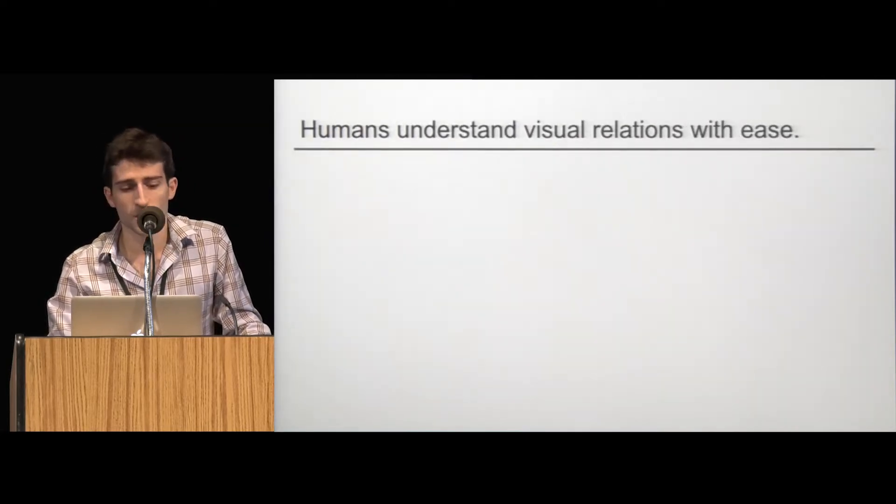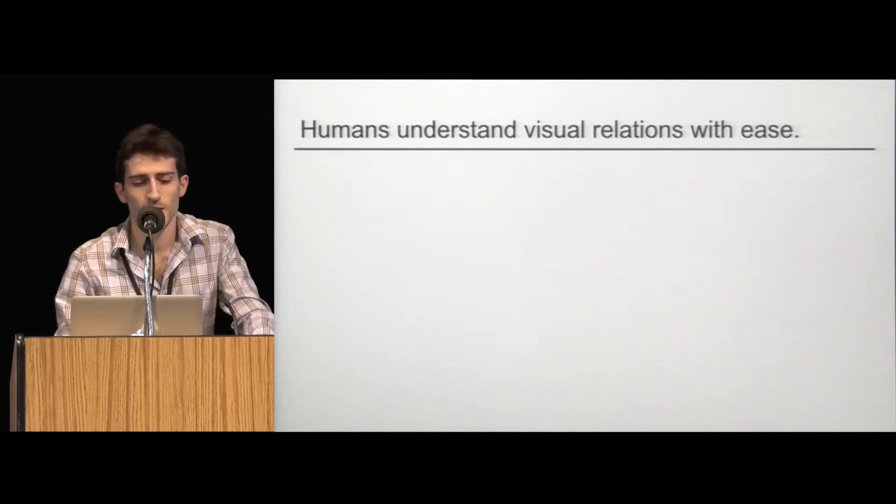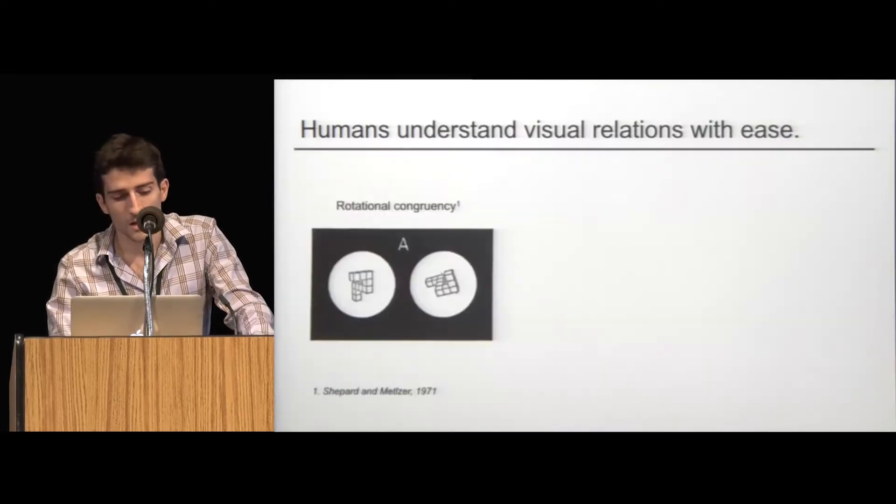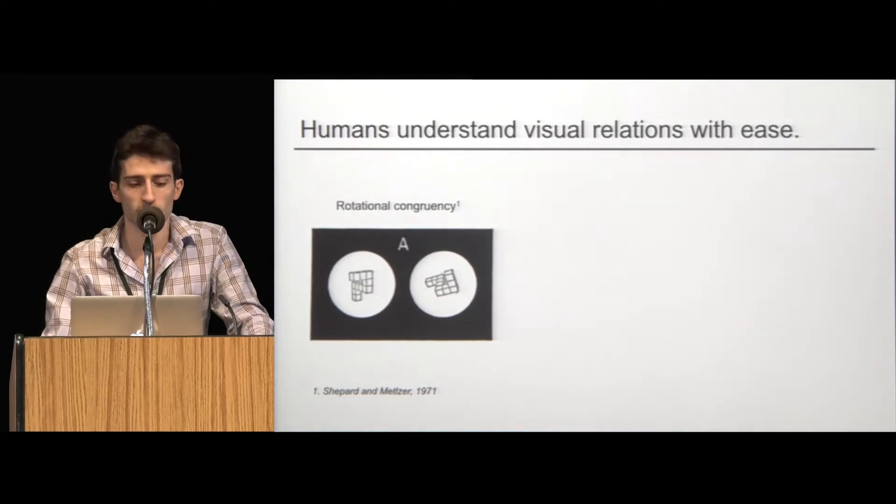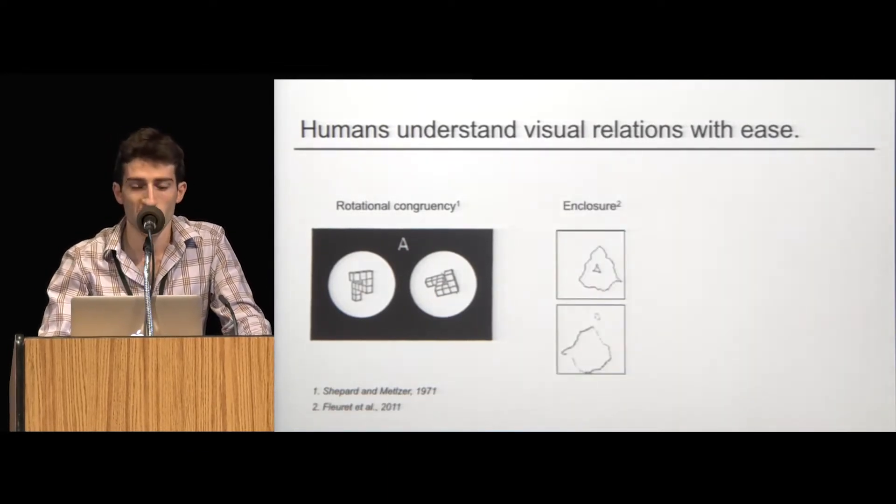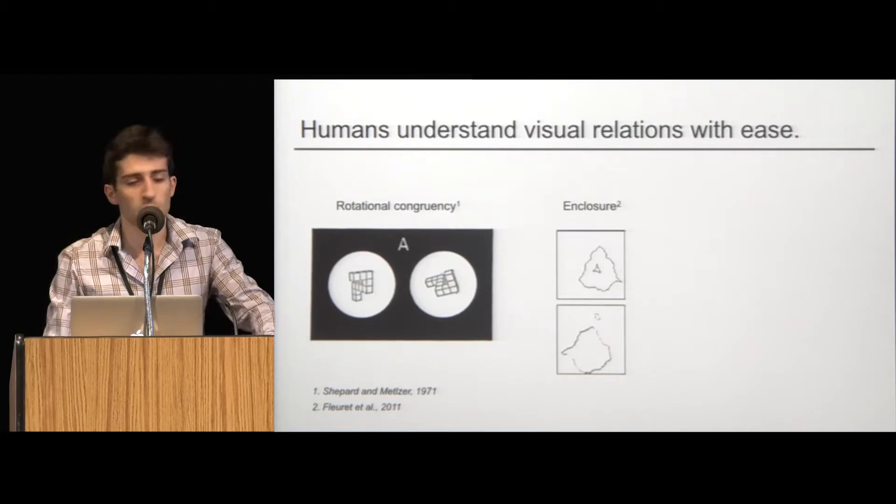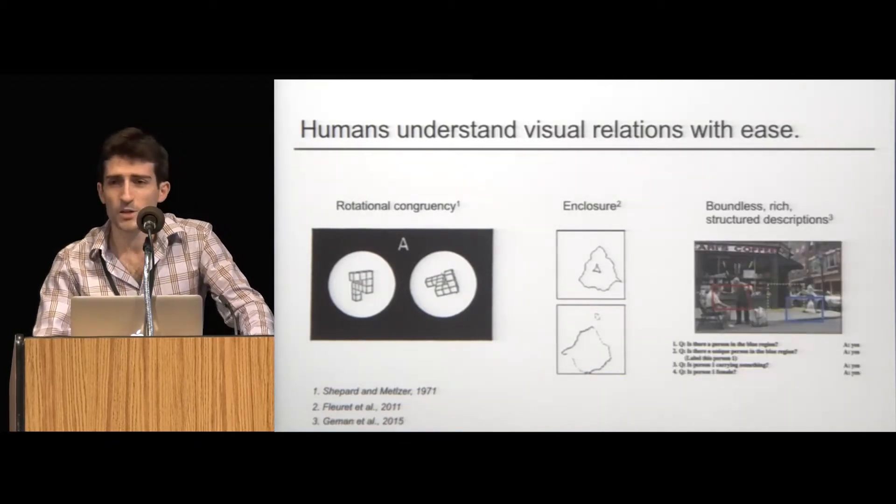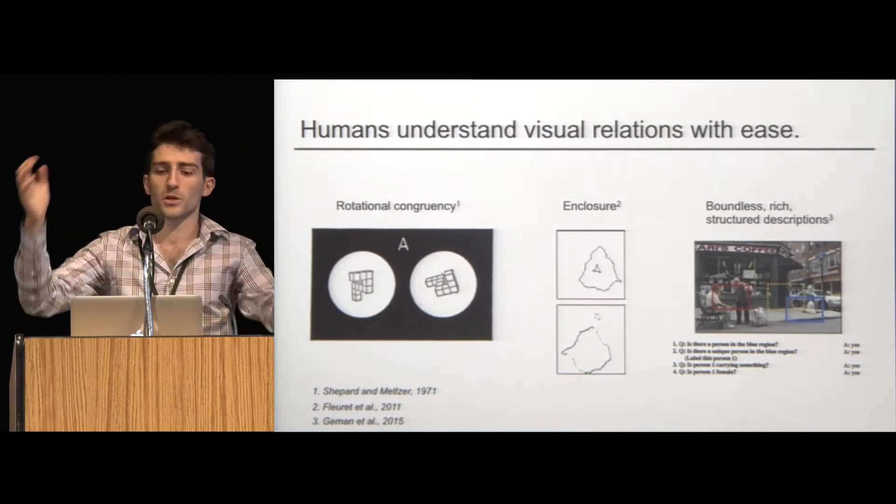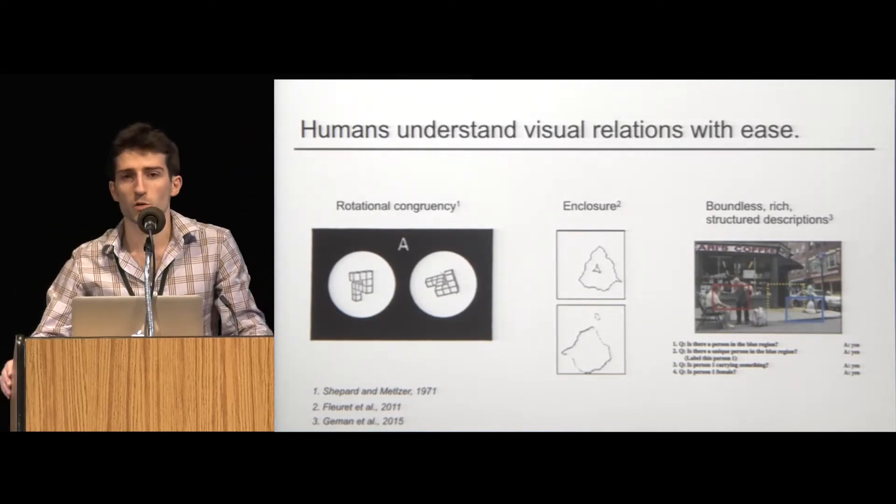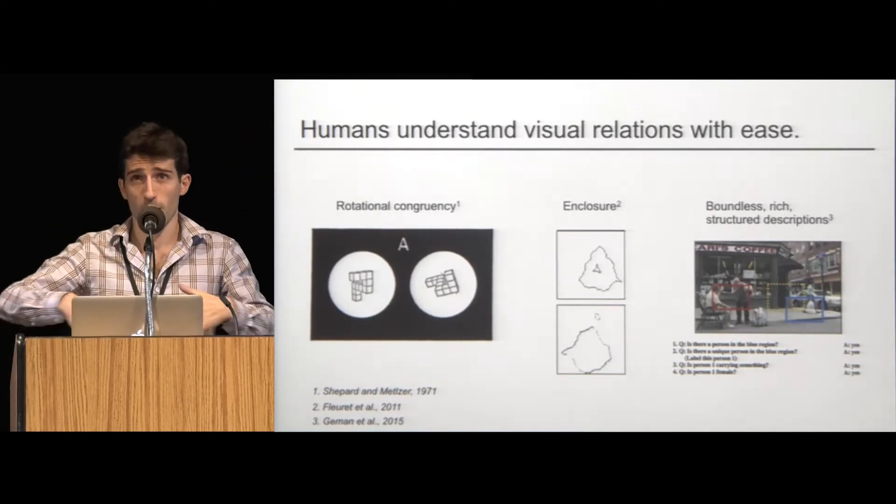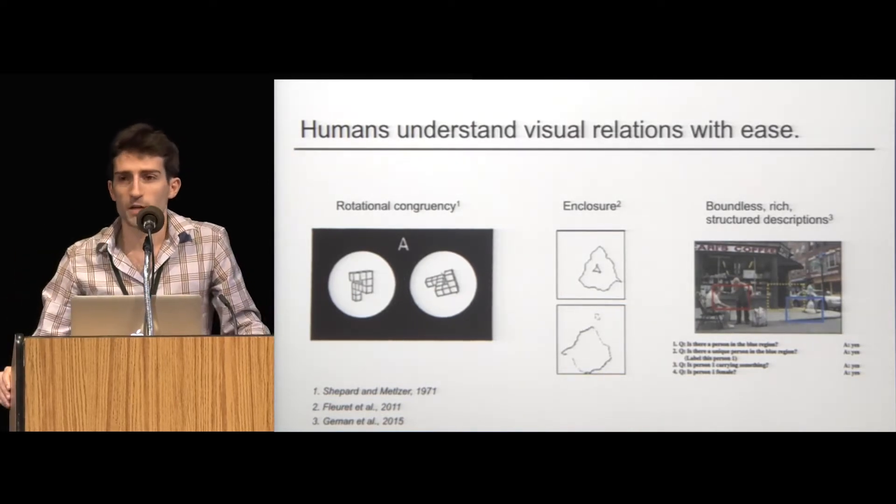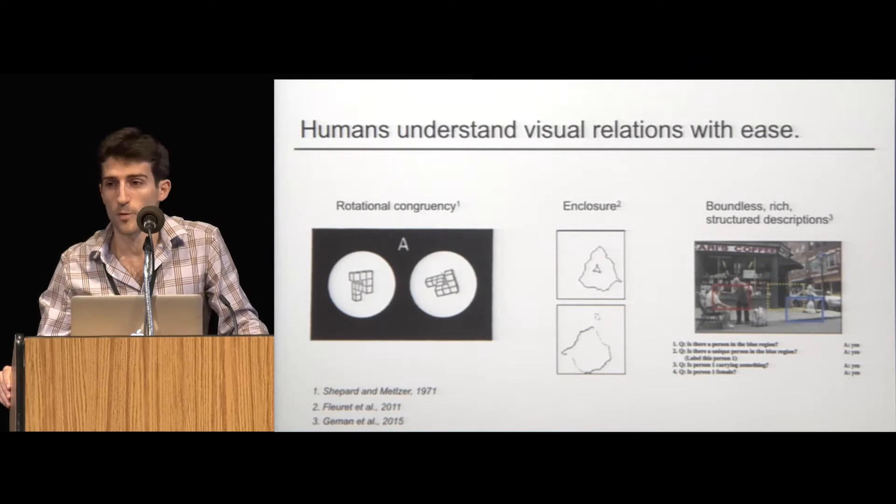And why are you smarter than a CNN? You're smarter than a CNN because humans understand visual relations with ease. They can detect rotational congruency. We know that from Shepard and Metzler in 1971. They can see when things are enclosed in one another. This is a stimulus from Florey et al, 2011. And in general, we can construct the boundless, rich, structured descriptions of the world much in the way that our linguistic capabilities affords us an infinite productive set of sentences to describe the world around us.